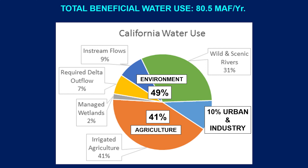The current trend shows gravity or surface irrigation going down while drip and subsurface irrigation is increasing. Field crops are decreasing while orchards and vineyards are increasing — higher-value crops that require better skills in irrigation scheduling and management.